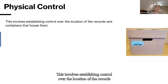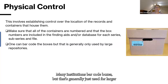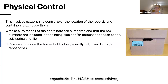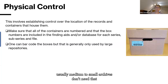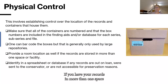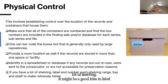Physical control involves establishing control over the location of the records and the containers that house them. Make sure that all containers are numbered and that the box numbers are included in your finding aids or database for each series, sub-series, and file. Many institutions barcode boxes, but that's generally just used for larger repositories like NARA or state archives — medium to small archives don't need that. Identify in a spreadsheet or database if any records are out on loan, sent to the conservator, or not accessible to the public. If you have a lot of shelving, it might be a good idea to label each range, bay, and shelf to make retrievals easier.